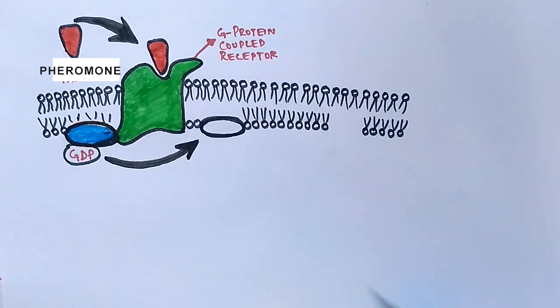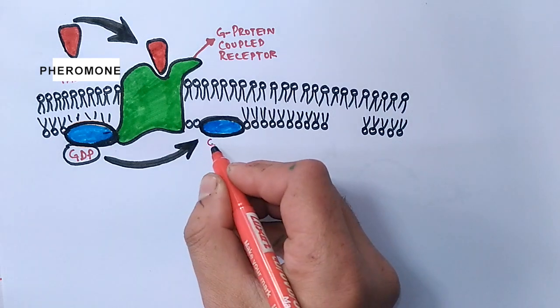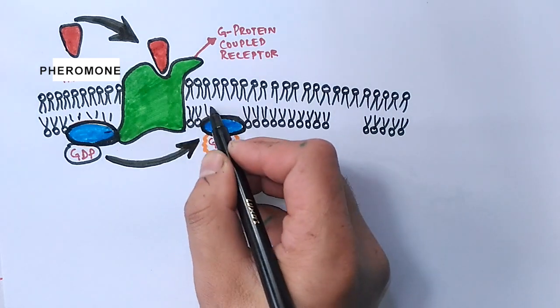By the action of GEF, the GDP is exchanged for GTP on the G protein, and with the association of GTP to the G protein, the G protein becomes activated.